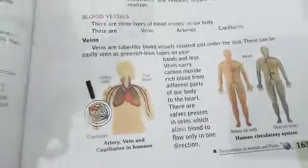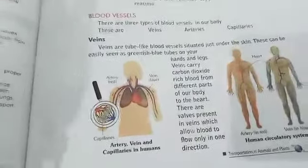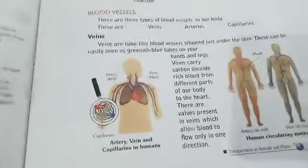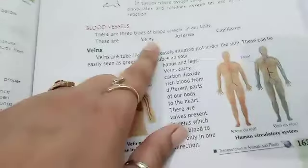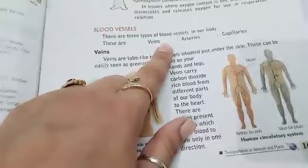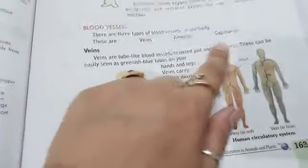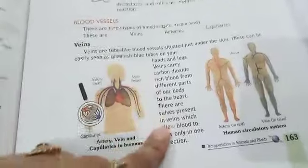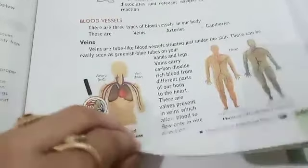How many types of blood vessels are there, through which blood is flowing? I told you in the last lecture. There are 3 types of blood vessels: veins, arteries, and capillaries. About veins we have already read. Now we will read about arteries.